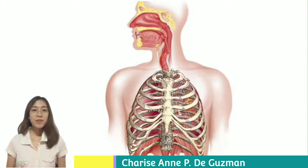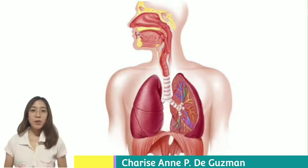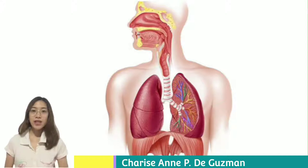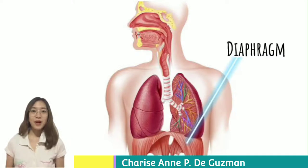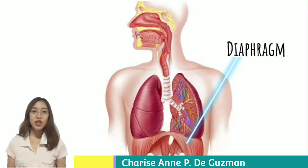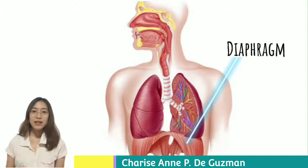Our lungs are protected by the ribcage, which has gaps to allow contraction and relaxation. The last component of the respiratory system is the muscle structure, also known as the muscles of respiration. These muscles surround the lungs and allow inhalation and exhalation of air. The main muscle is the diaphragm, a thin sheet of muscle at the bottom of the thorax, which pulls air into the lungs by contracting. Multiple intercostal muscles between the ribs also help compress and expand the lungs.